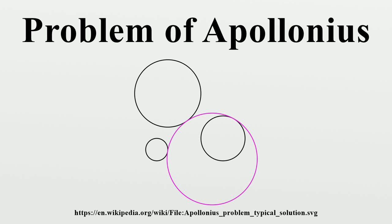Several other geometrical solutions to Apollonius' problem were developed in the 19th century. The most notable solutions are those of Jean-Victor Ponslet and of Joseph Diaz-Gergon. Ponslet's proof relies on homothetic centers of circles and the power of a point theorem, while Gergon's method exploits the conjugate relation between lines and their poles in a circle. Methods using circle inversion were pioneered by Julius Peterson in 1879, with one example being the annular solution method of HSM Coxeter.